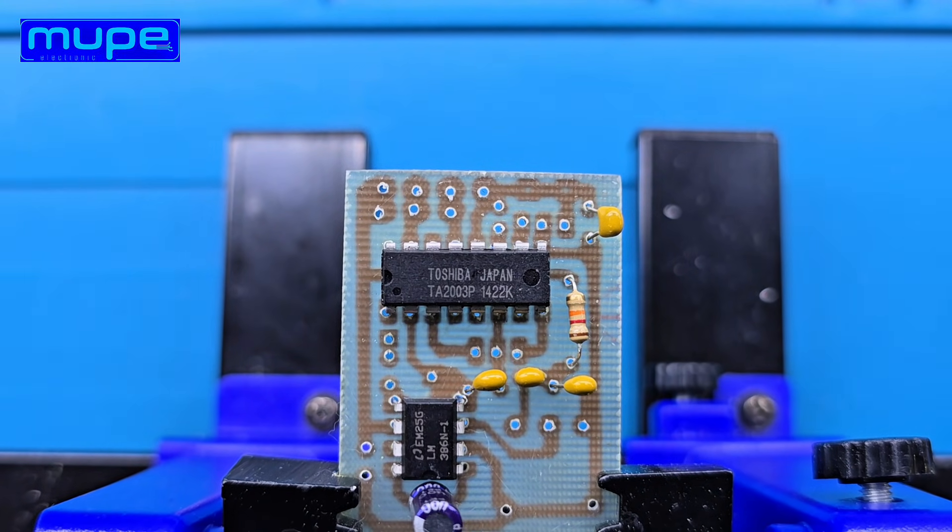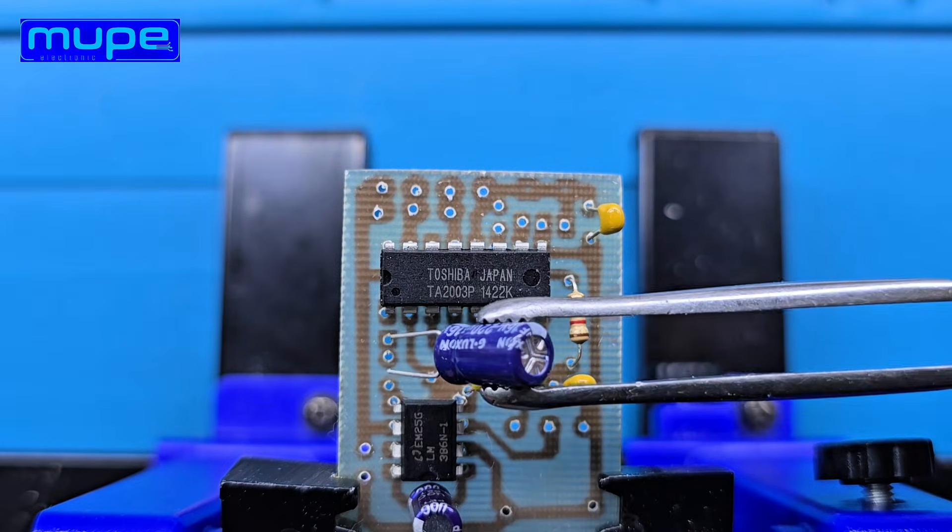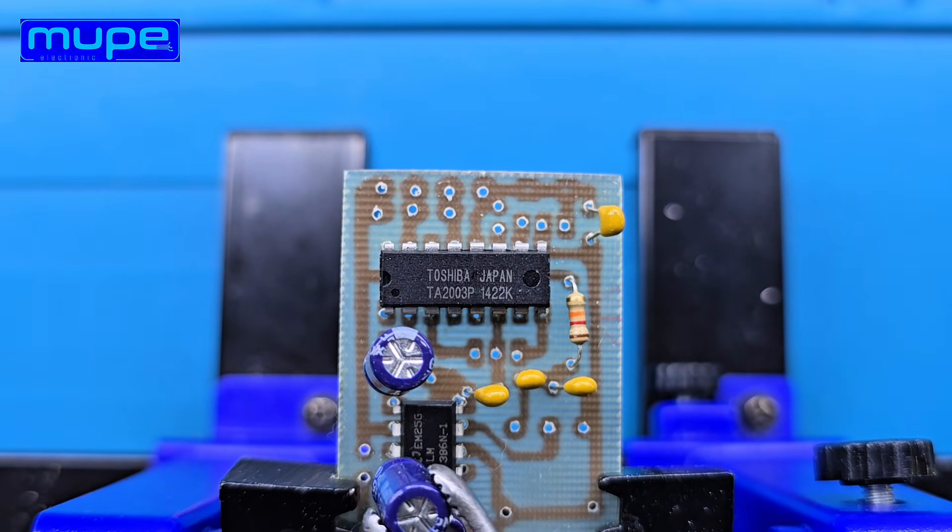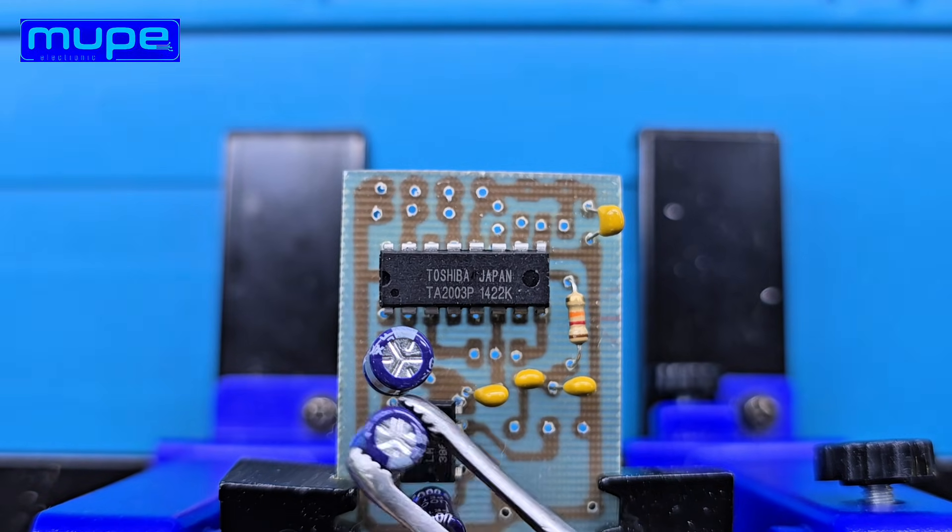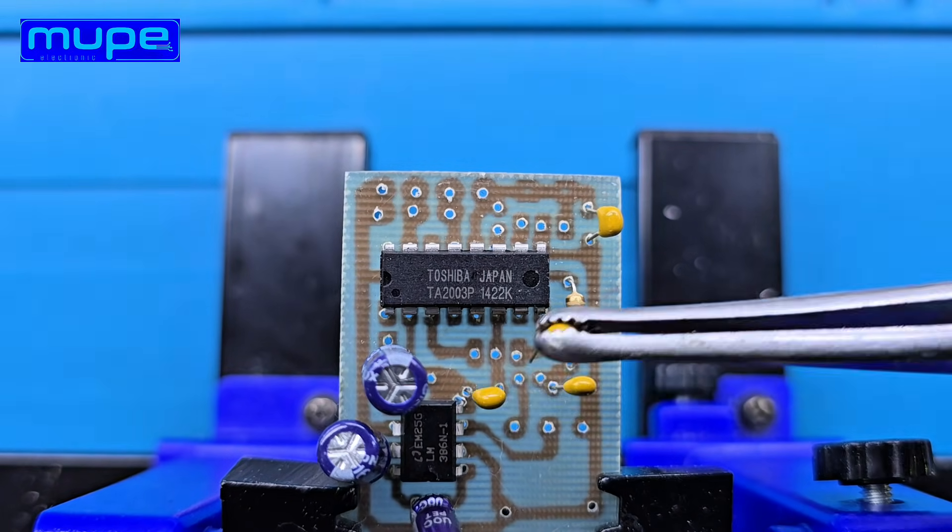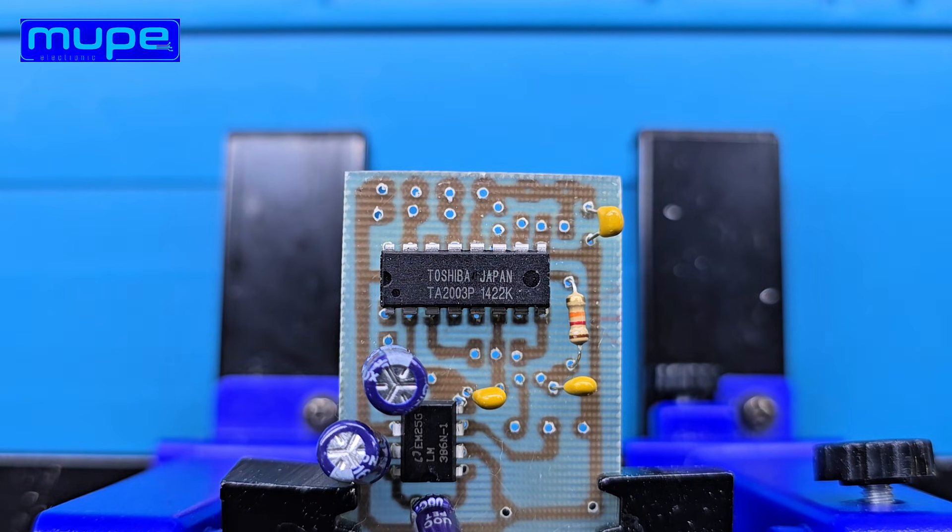The TA2003 is basically a tiny radio module by itself, because it includes the RF tuner, the IF filter, and the detector all inside one chip. It needs only a few external components, which makes it perfect even for beginners.